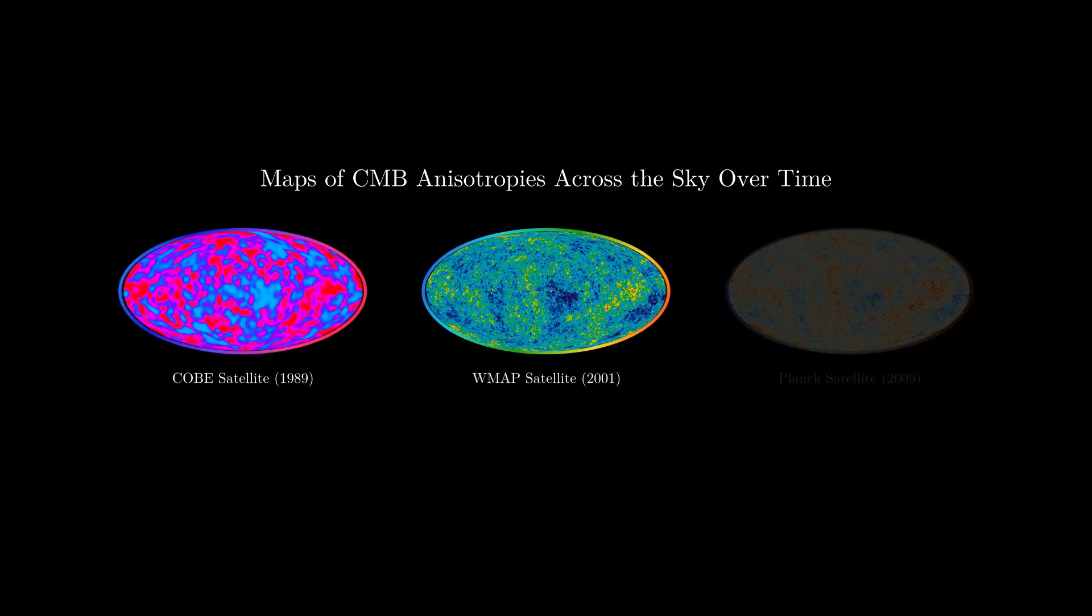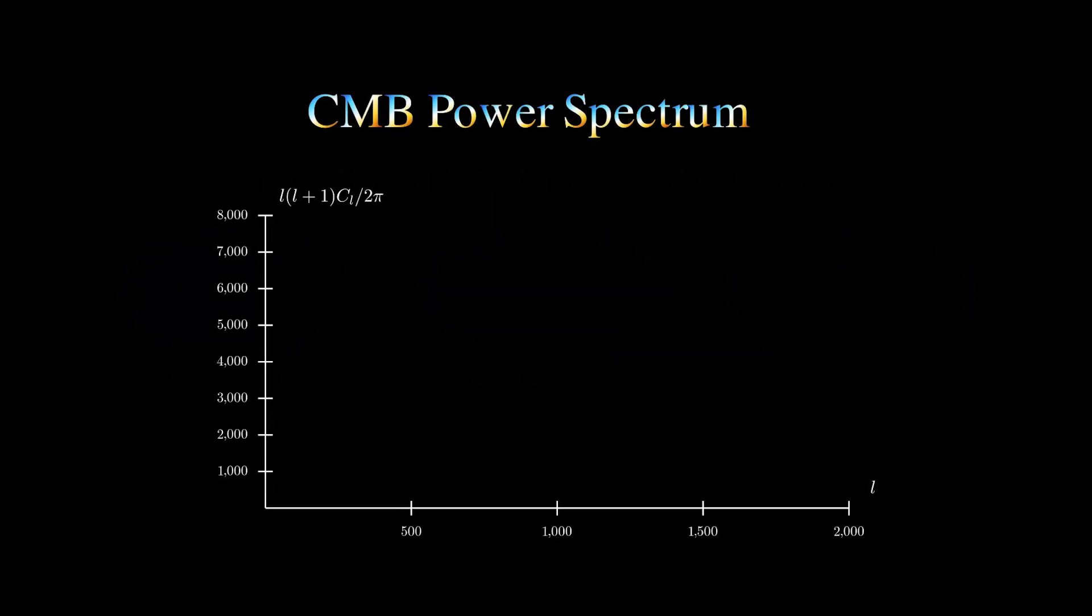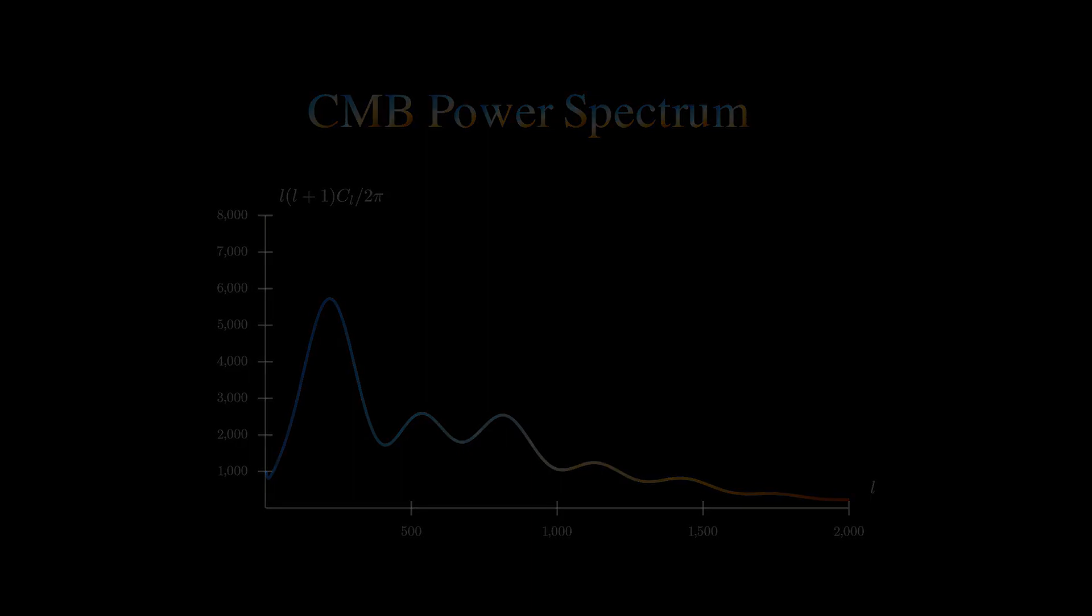In this video, we'll introduce the most important of these statistical properties, the power spectrum, and we will explain the origin of its most prominent feature, a series of peaks. These peaks were predicted over 50 years ago and have, in the past 20 years, been discovered and measured with high precision. They reveal some of the beauty and simplicity of the acoustic physics that produces them.